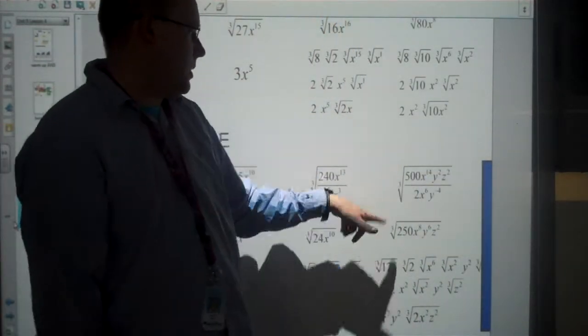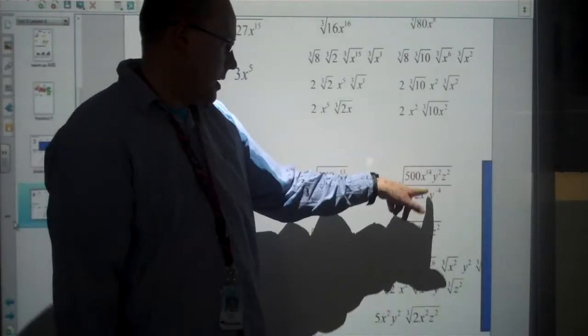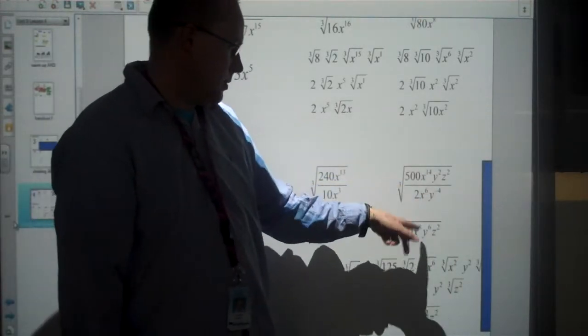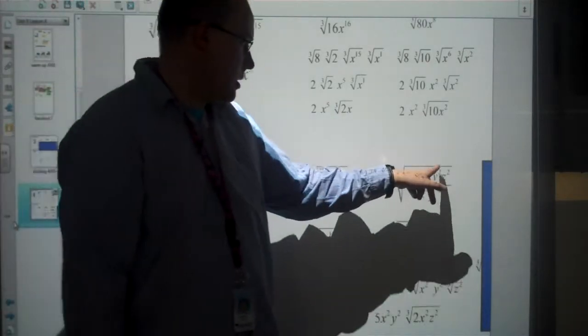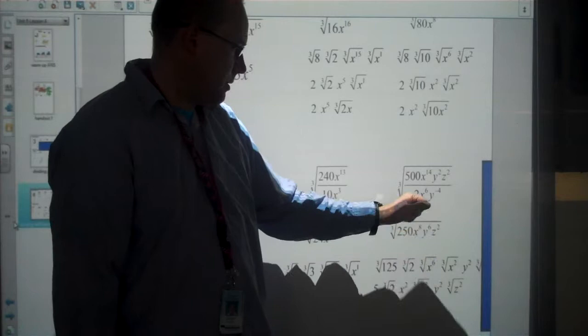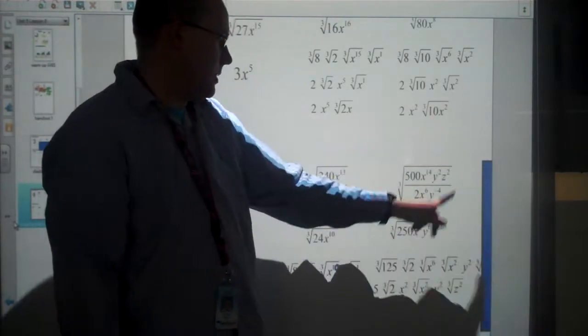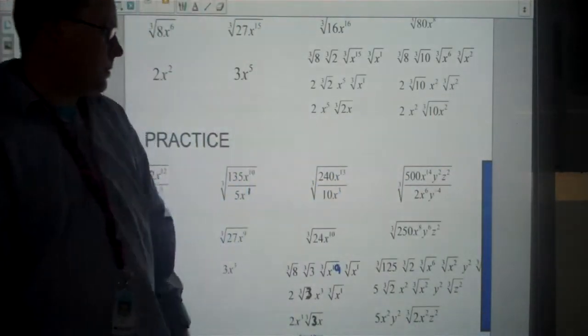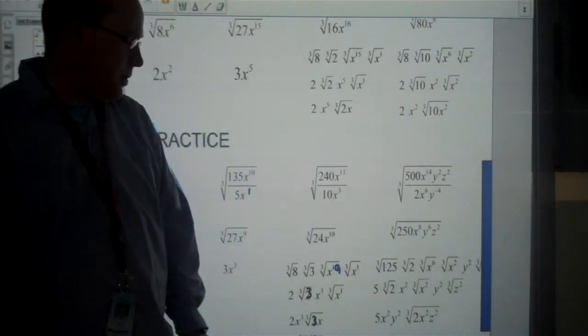And to finish with, 500 divided by 2 is 250. x to the 14 divided by x to the 6 subtracting gives us x to the 8. y squared take away negative 4. So, 2 take away negative 4 is to the power of 6. There is no other term except for z squared, so that can stay at the top. 250 we can write as 150 times 2.